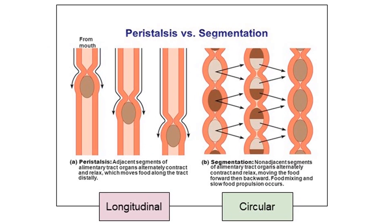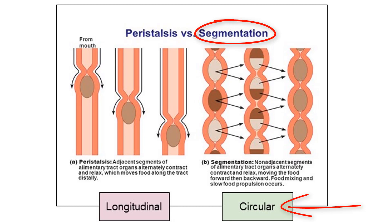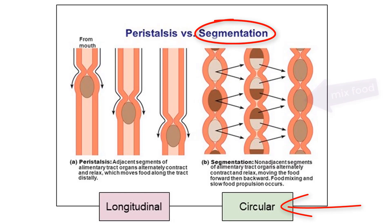Next, we have another type of movement called segmentation. This moves different, non-adjacent portions of the small intestine back and forth with relaxing and contracting circular muscle. The main purpose of this muscle movement is not to move food from one end to the other, but instead to mix food with enzymes so it can be properly broken down. This movement occurs with circular muscle, primarily in the small intestine.